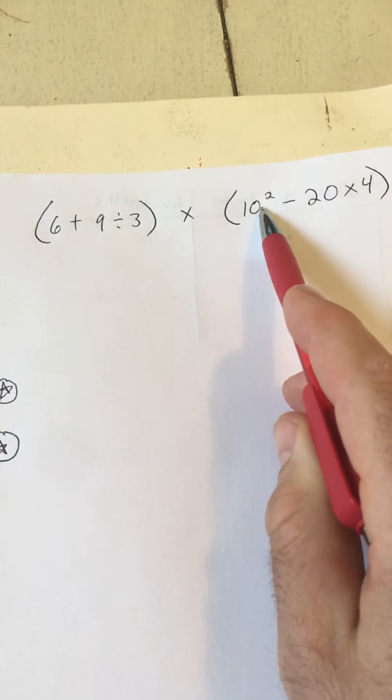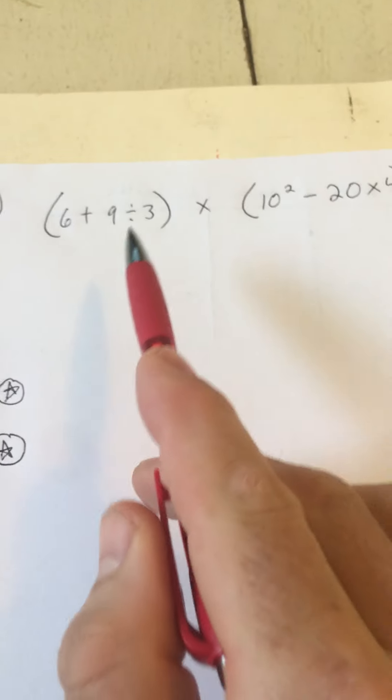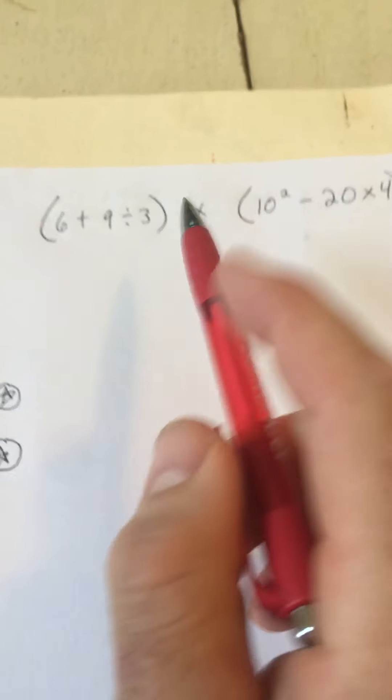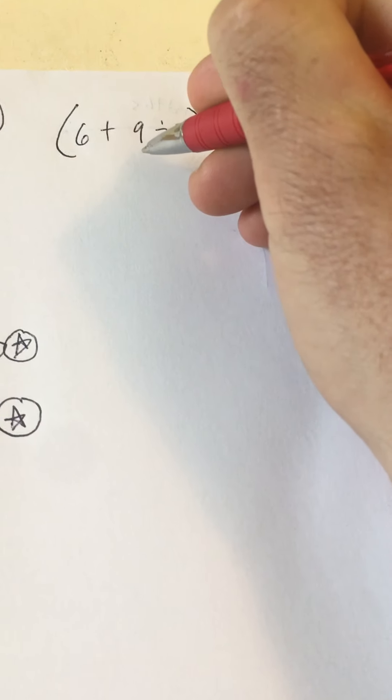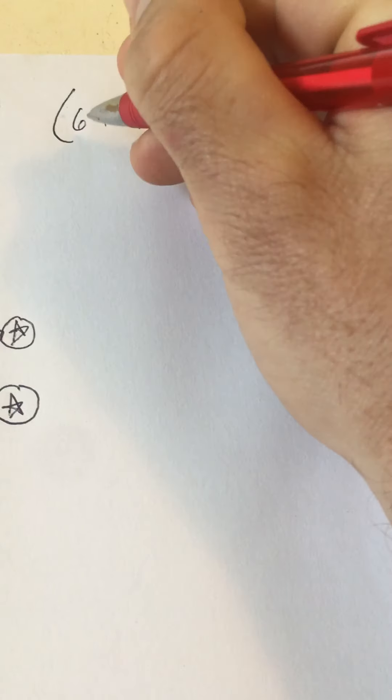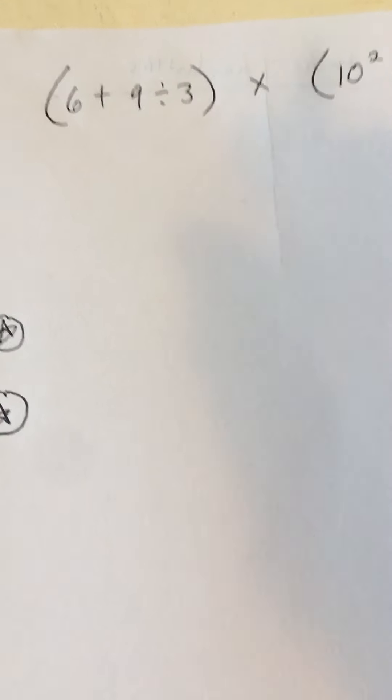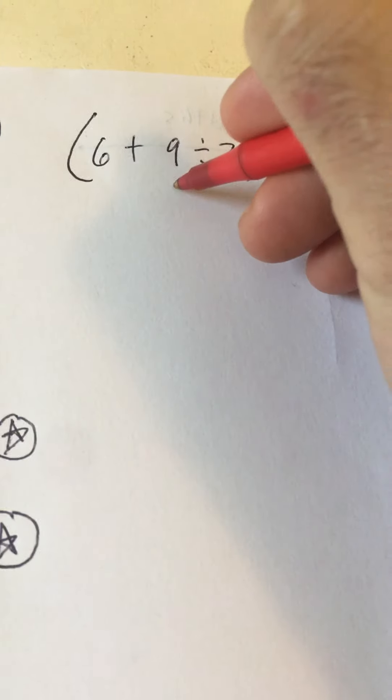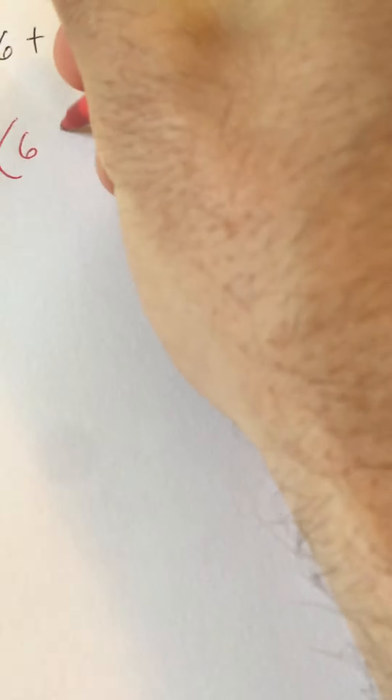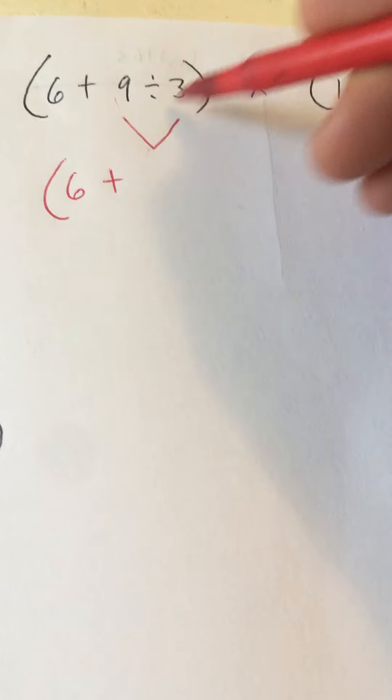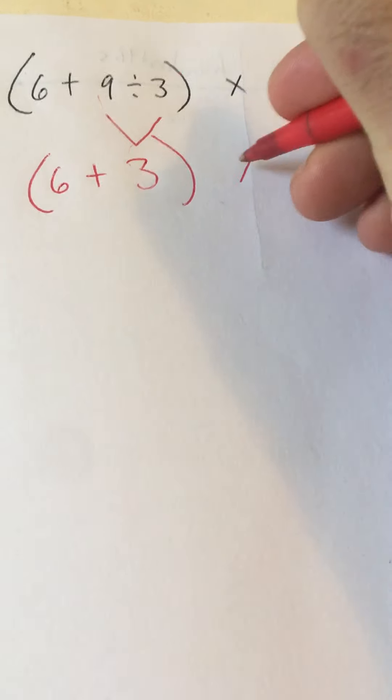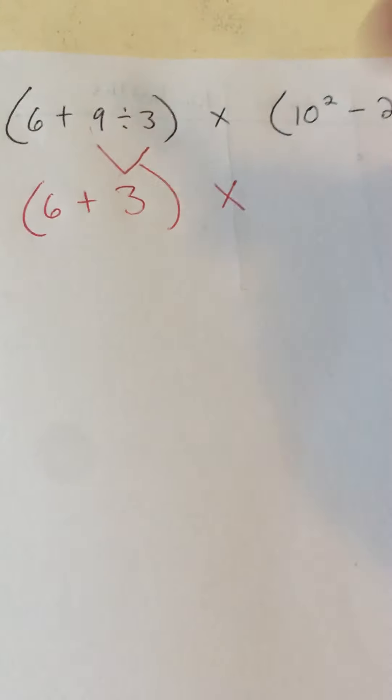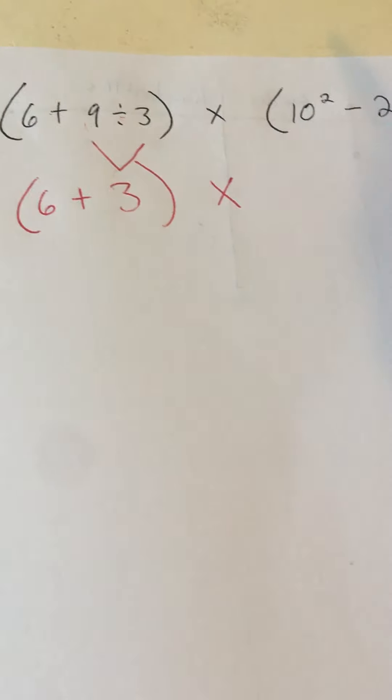So we're going to start with the parentheses. Notice that this one has an exponent in the parentheses. So we're going to do the exponent inside of the parentheses also. We're going to start with the parentheses, but we're going to do the division before we do the addition here at the beginning. You're not going to do 6 plus 9 first. You have to do the division before you do that. So I'm just going to rewrite 6 plus, and I have to just do this division first. 9 divided by 3 is 3. So I still have parentheses there. All I did was get rid of the division.